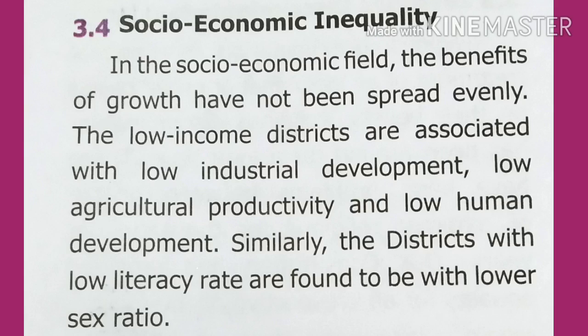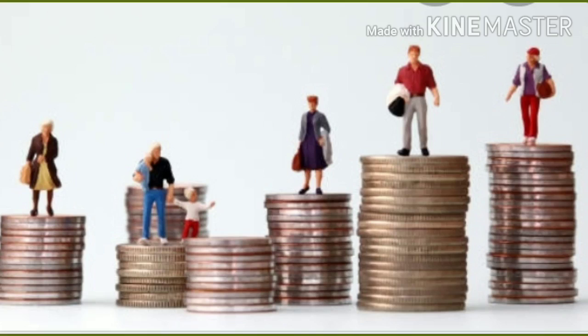Districts with low industrial development, low agriculture productivity and low human development are still found. Similarly, the districts with low literacy rate are found to have a lower sex ratio. This relates to socioeconomic inequality.